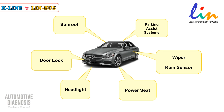Here are some examples of systems that use LIN network: sunroof, power door lock system, headlights, adaptive front lighting system, power seat, wipers and rain sensors — sometimes the communication between the rain sensor and body control module uses LIN network — and parking assist systems, which we're going to see in this video. You can find the LIN bus video link in the description to watch everything about the LIN network.